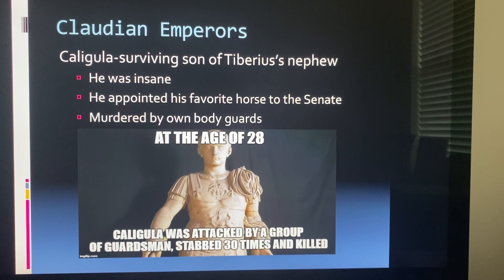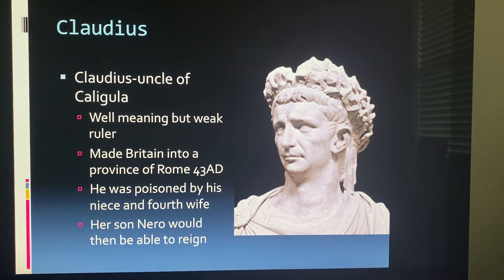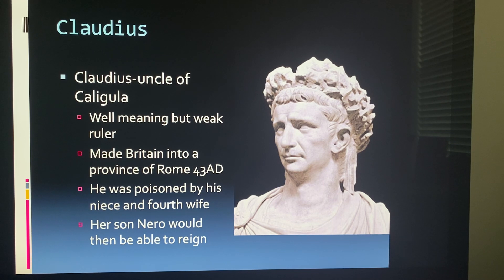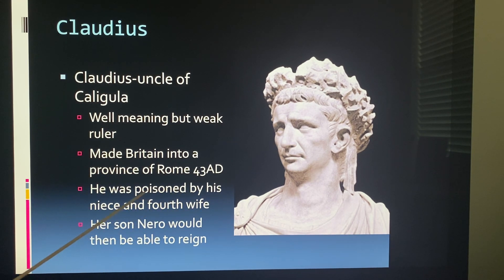Claudius was the uncle of Caligula — well-meaning but a very weak ruler. He made Britain into a province in 43 AD, sending his army and soldiers into Britain. He was poisoned by his niece and fourth wife so that her son Nero could reign.